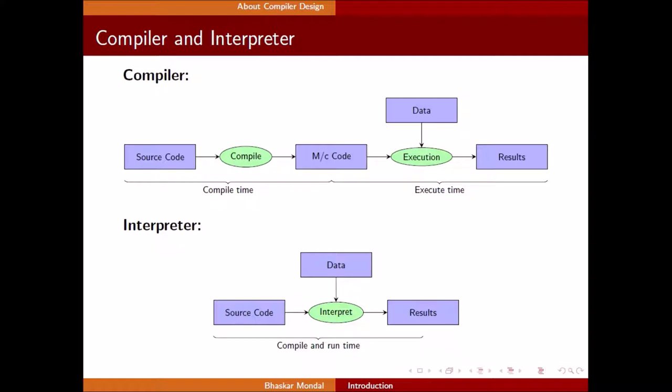Now if you look at this, how compiler works. We write some source code in C or Java or anything. It goes to the compiler. It compiles. Then it generates some machine code which is going to be executed on some processor. At that time, we need to provide data which we want to process, and that processor after execution generates the result. On the other hand, if you look at interpreter, we have source code here. There is interpreter which interprets. At the time of interpretation, it needs data input and at the same time it generates the result. So here you can understand the difference between compiler and interpreter.